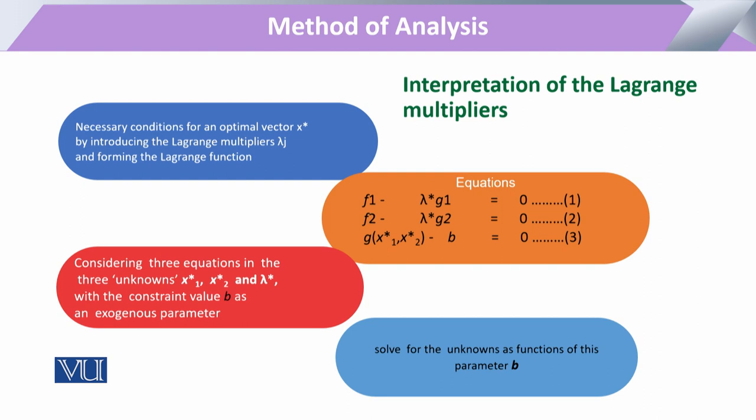We have one objective function which we have calculated that will satisfy our objective function with respect to the constraint. Second, we have one equation from the first-order condition, and third, we have the constraint equation — together these three form the system we need to solve.